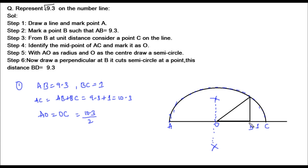From point B, we draw a perpendicular such that it cuts the semicircle at a point, which we mark as D. This BD is equal to square root of 9.3 units.